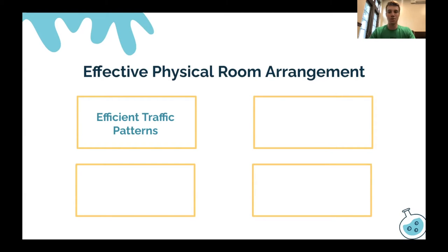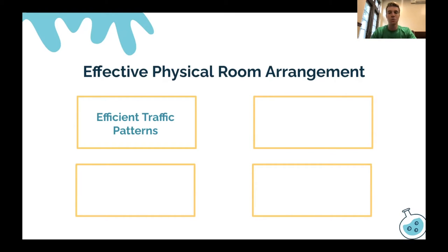It's important to have easy accessibility to storage, resources, and tools — not only for students, but also for the teacher. We can place frequently used supplies, equipment, and materials in easy-to-access places. Studies have shown that students are actually more likely to use materials that are easily accessible. We can also assess the bump factor beforehand — what the bump factor tells us is what places in the classroom experience high foot traffic, so we can brainstorm ways to decrease those bump factors.